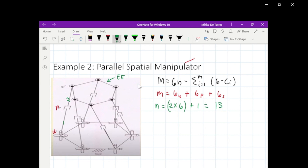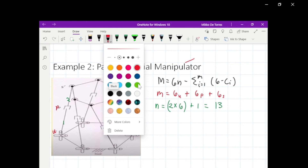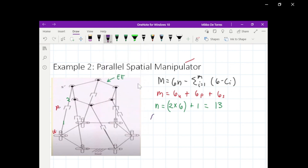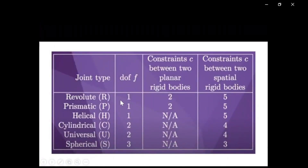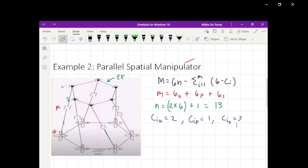Next, let's obtain the number of degrees of freedom for each joint. The universal joint has two degrees of freedom, the prismatic joint has one degree of freedom, and the spherical joint has three degrees of freedom. These values come from a reference table: one for revolute, one for prismatic, one for helical or twisting, two for cylindrical, two for universal, and three for spherical.